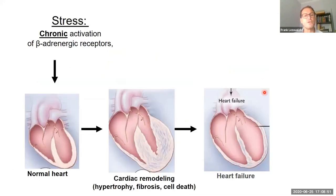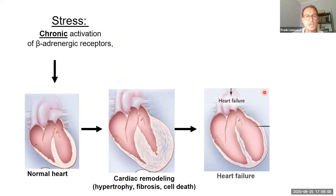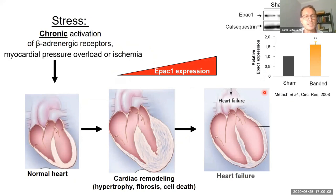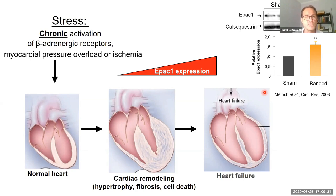One of the first experiments we did was to monitor the expression of EPAC protein, especially EPAC-1, in various models of cardiac remodeling, such as chronic activation of the beta-adrenergic receptor, cardiac ischemia, and myocardial pressure overload. Whatever the species — mice, rats, or even in human hearts — we found an increase of EPAC-1 expression during cardiac remodeling and heart failure. The next step was to understand the functional effect of this upregulation of EPAC-1 expression in the heart under stress conditions.